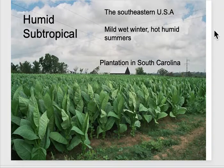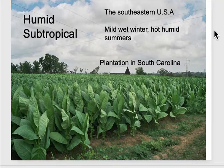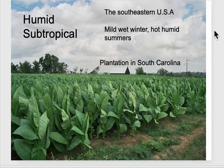On the east coast in the southeast we have the humid subtropical — mild wet winters but very hot and humid summers. Think of Georgia, South Carolina, and even parts of Florida.